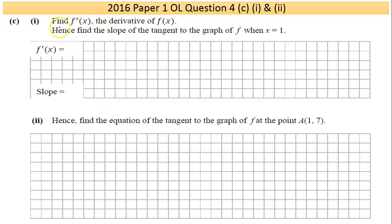Part C uses a different function notation — this looks different because it has an apostrophe. f'(x) is the same thing as dy/dx, which gives you a hint that it's to do with differentiation. They also give you the hint by using the word 'derivative.' So you take your function, differentiate it to get your f'(x), and then you're asked to find the slope of the tangent when x is one.